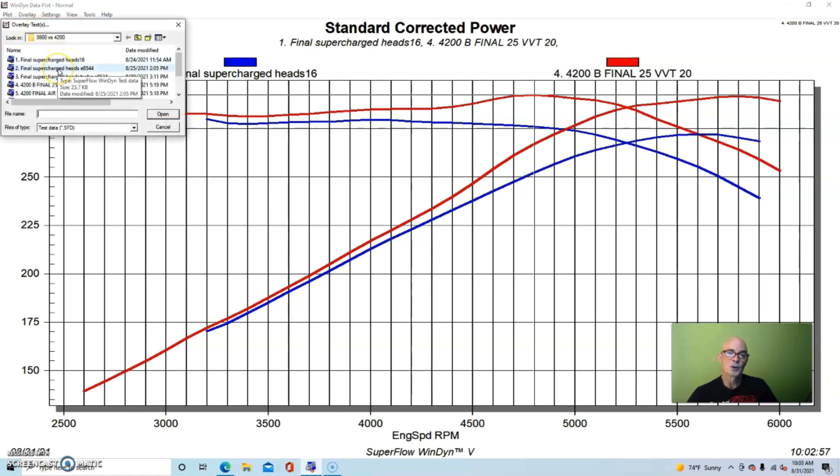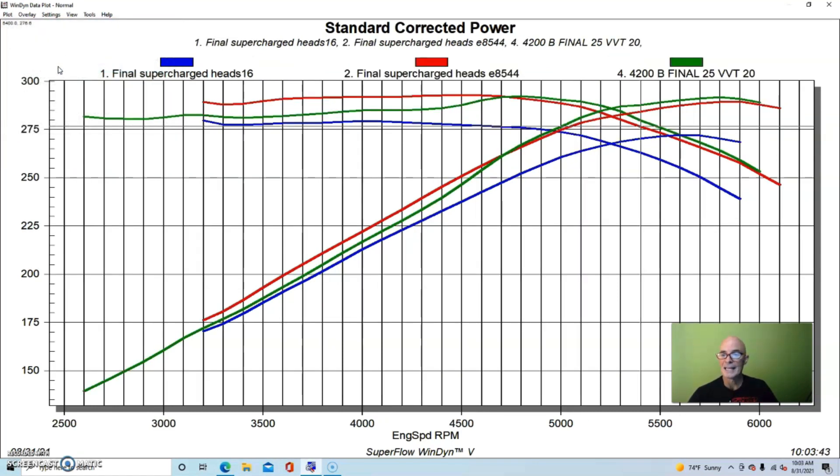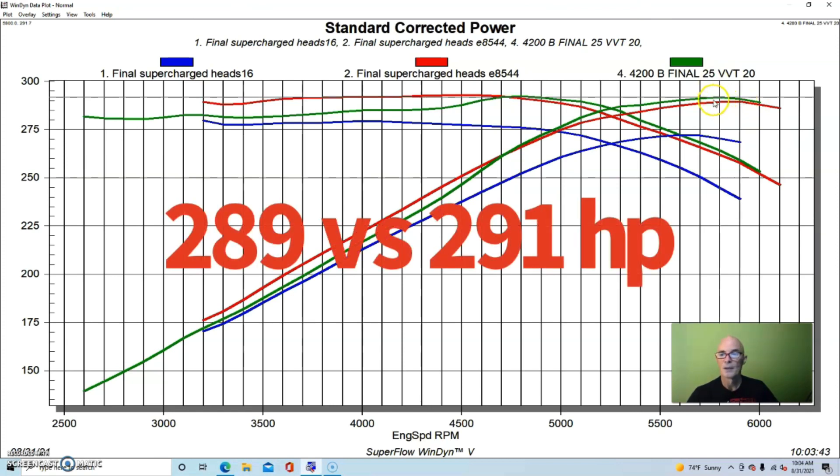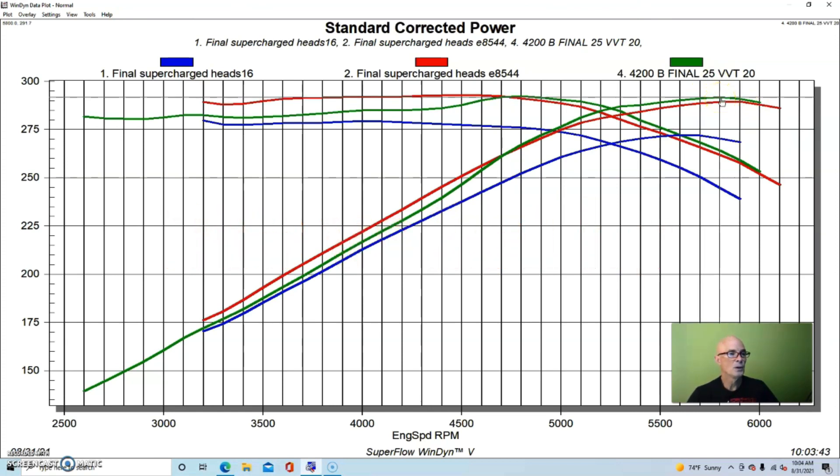But on the supercharged 3800 Series 3 motor when we added E85 it picked up quite a bit of power. In fact when we ran E85 in that motor with stock boost and stock throttle body and stock pulley the power output was very comparable to the 4200. As you can see they both made very close to the same peak power 291 versus 291 versus 289. So very close in terms of peak power. If you look at the curves they're very comparable. Down below 4500 RPM it looked like the supercharged version had a little advantage in torque production although the torque curve from the 4200 was also very flat.